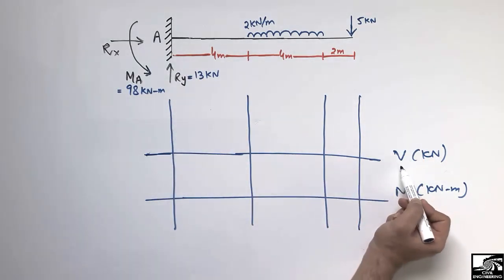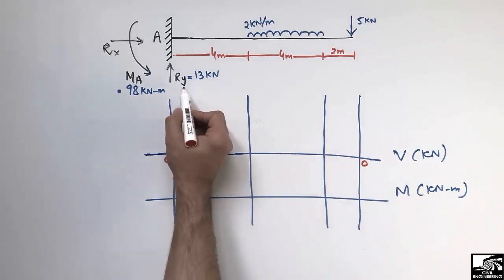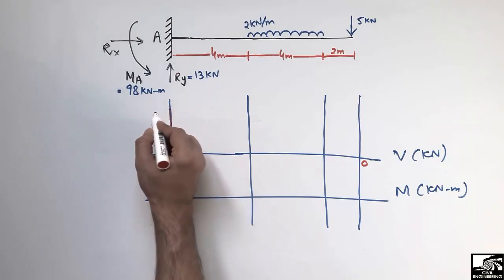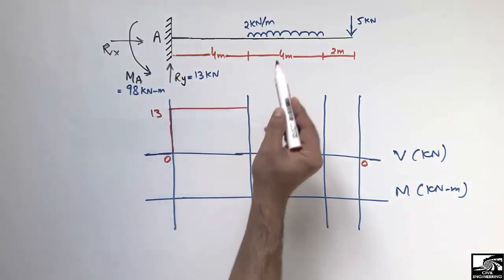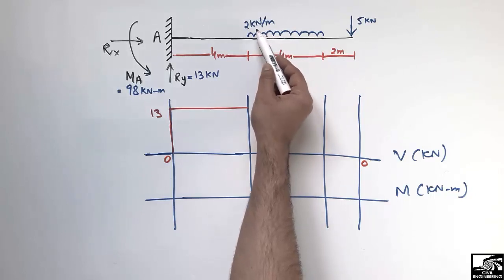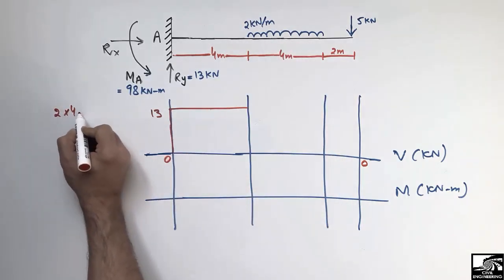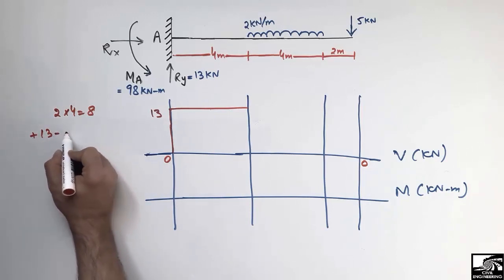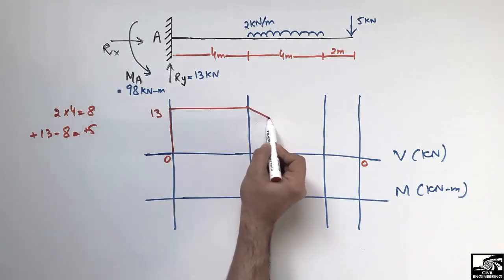To draw the shear force diagram, starting from zero reference: Ry = 13 kN acts upward, so the shear force jumps to +13 kN. There is no load on the beam for the next section, so it remains a straight line. Then the UDL of 2 kN/m over 4 meters acts downward: 2 × 4 = 8 kN. So 13 minus 8 brings the shear force down to +5.